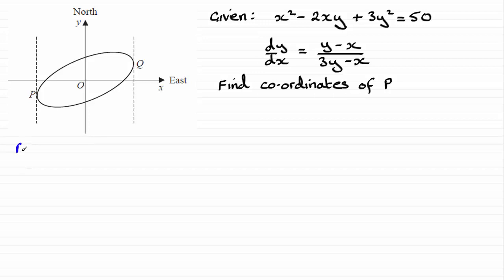So I'm just going to write a few notes here, that at P the gradient we know is going to be infinite. And that means that the denominator in our fraction here, the 3y minus x, must equal zero. And from this we can rearrange it and we can see that x will equal 3y.